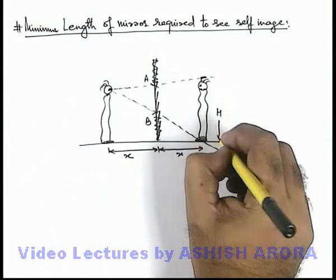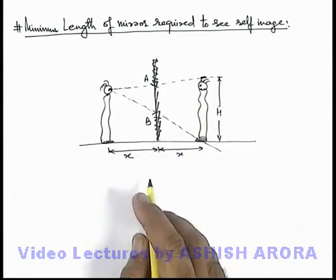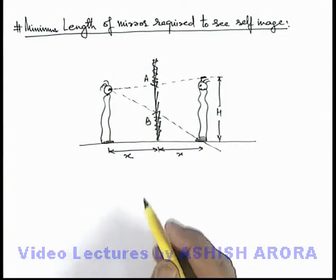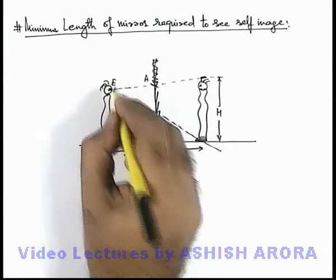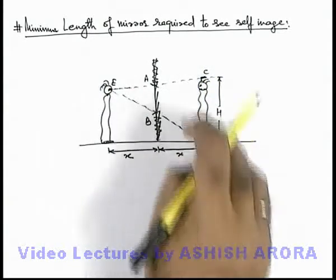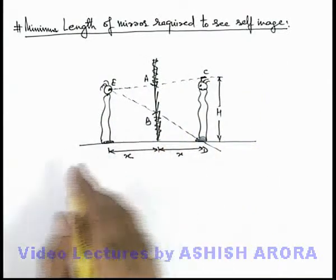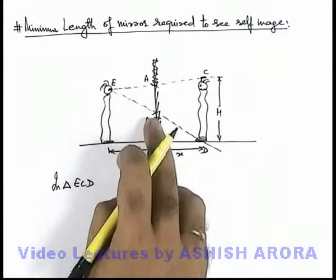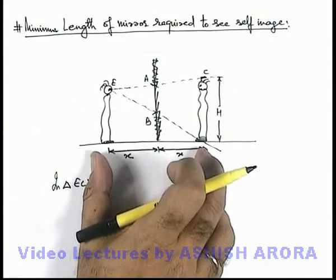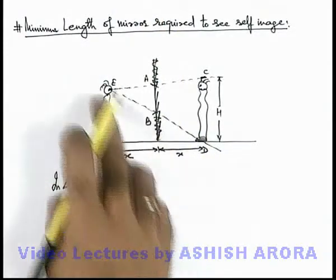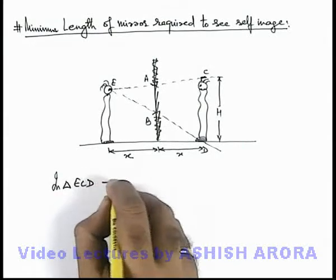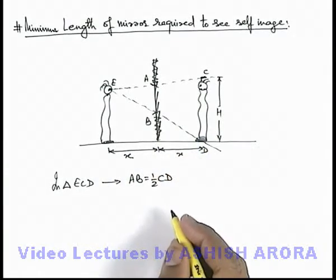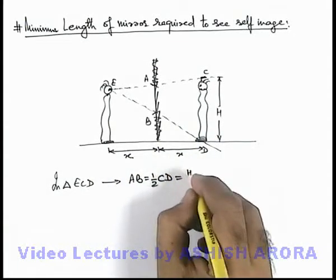If the height of the observer is h, then the height of the image will also be h, since in a plane mirror the image obtained is exactly the same size. In this situation, if these points are A and B, the eye of the observer is E, and C and D are the top and bottom points of the image, then in triangle ECD, line AB is parallel to the base and is at half the altitude of triangle ECD. So we can directly write that AB equals half of CD. Since CD is h, AB must be h/2.